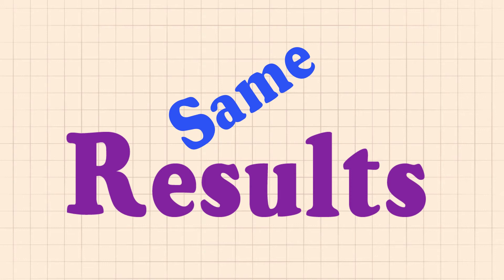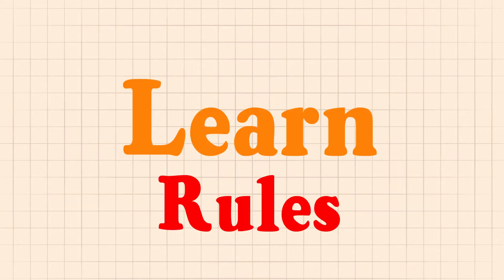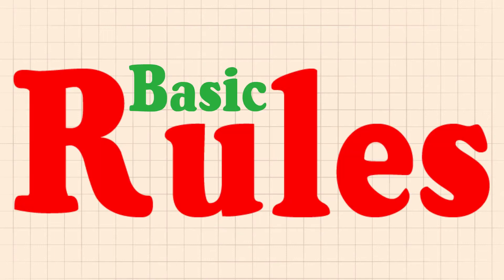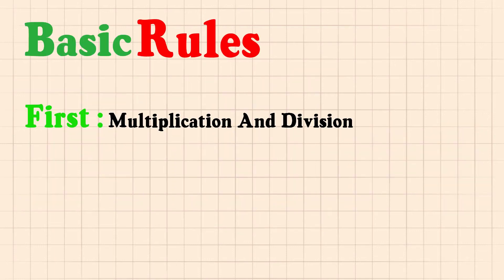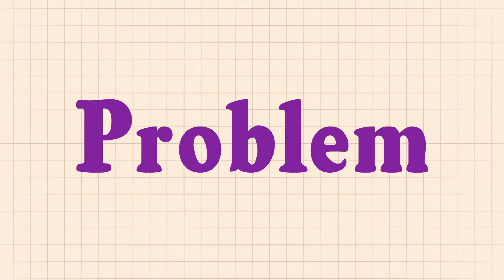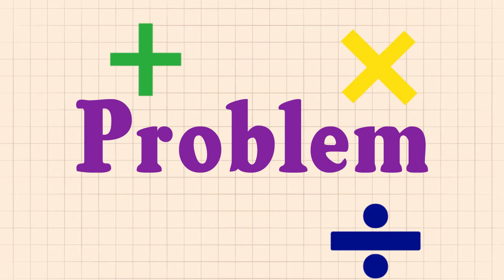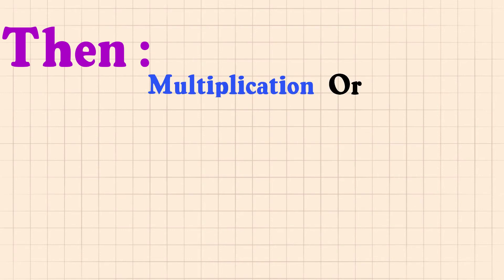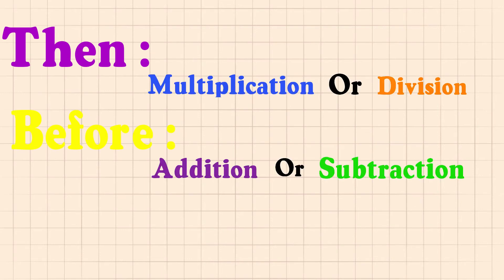So let's move ahead and learn the rules. We have two basic rules. First, do multiplication and division. Then do addition and subtraction. Which means when we have a problem with multiplication or division alongside addition and subtraction, we have to solve multiplication or division before addition or subtraction.